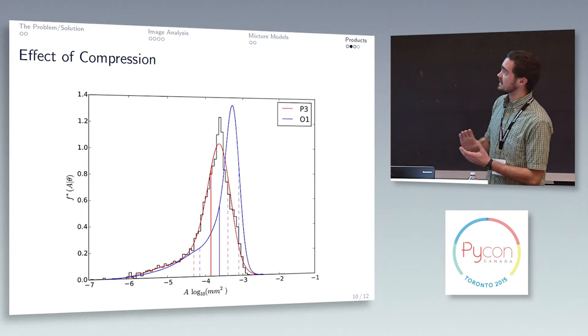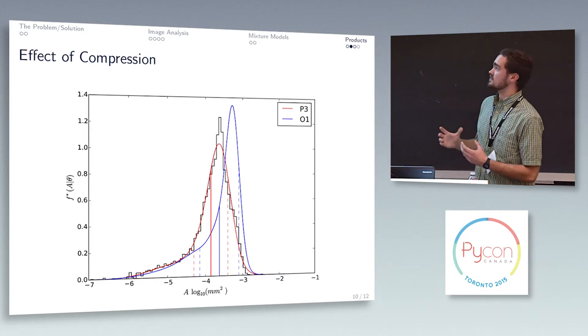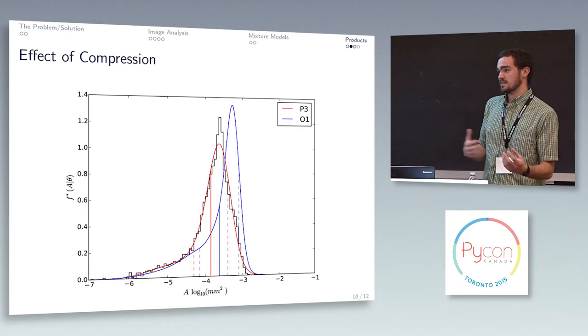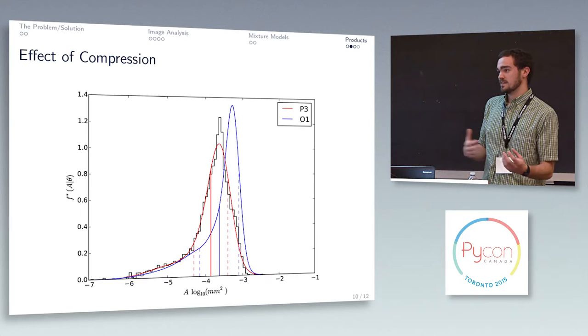When you start compressing things, the red line there that corresponds to the histogram, you see a reduction in the number of large pores, without seeing a reduction in the total pore area. Which is really important because that means that liquid uptake is affected not only by the pore sizes, but the number of pores.